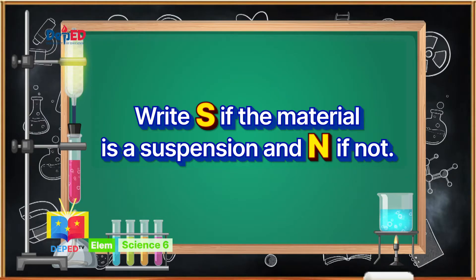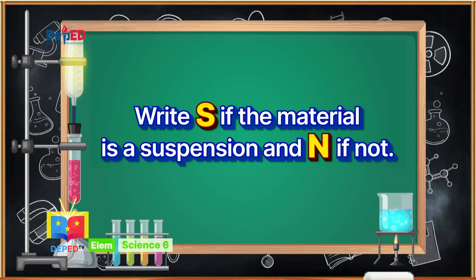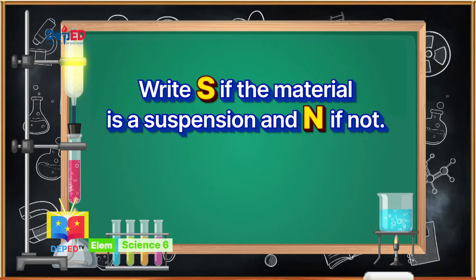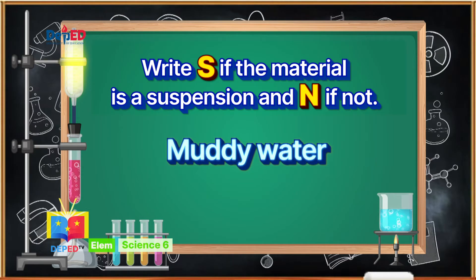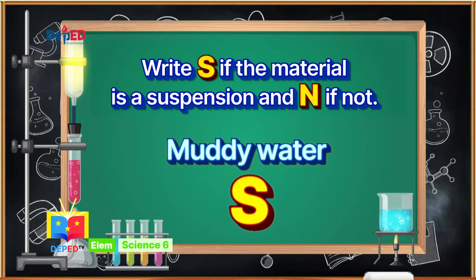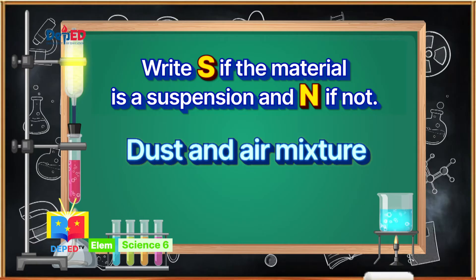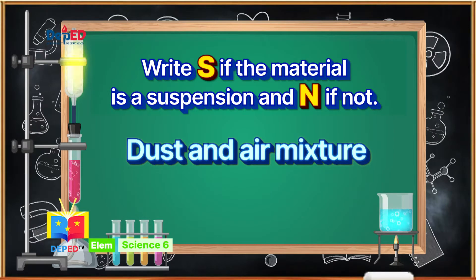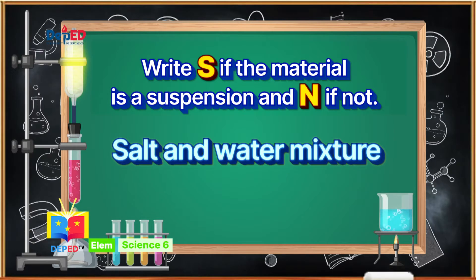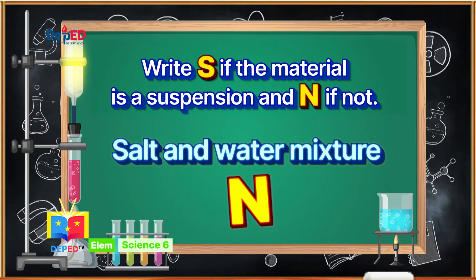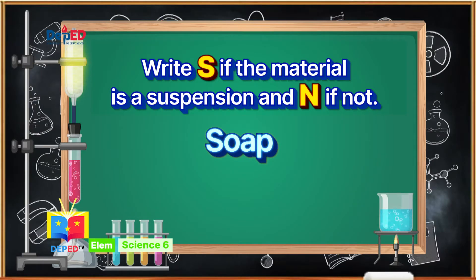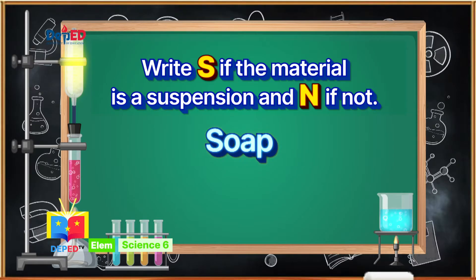Write S if the material is a suspension and N if not. Write your answers on your paper. Number 1: Water and Sand Mixture — the correct answer is S. Number 2: Muddy Water — the correct answer is S. Number 3: Dust and Air Mixture — the correct answer is S. Number 4: Salt and Water Mixture — the correct answer is N. And number 5: Soap — the correct answer is N.